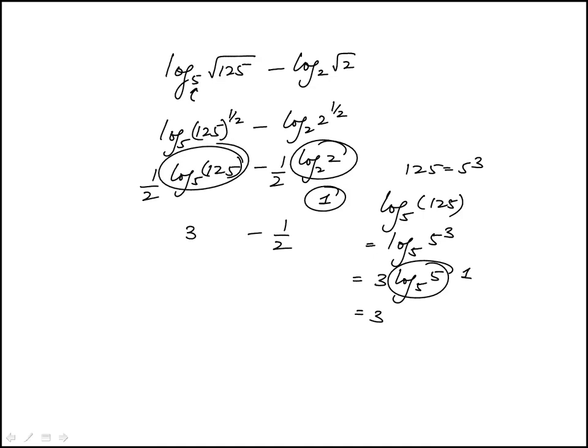So this becomes 3 over 2, one-half times 3, minus one-half, which is 2 over 2, or just 1.